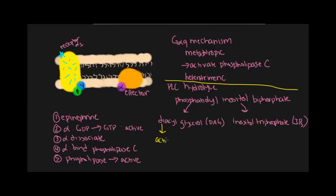DAG will activate protein kinase C. Protein kinase C will in turn phosphorylate different proteins within the cell, and the phosphorylation of these proteins results in intracellular events.